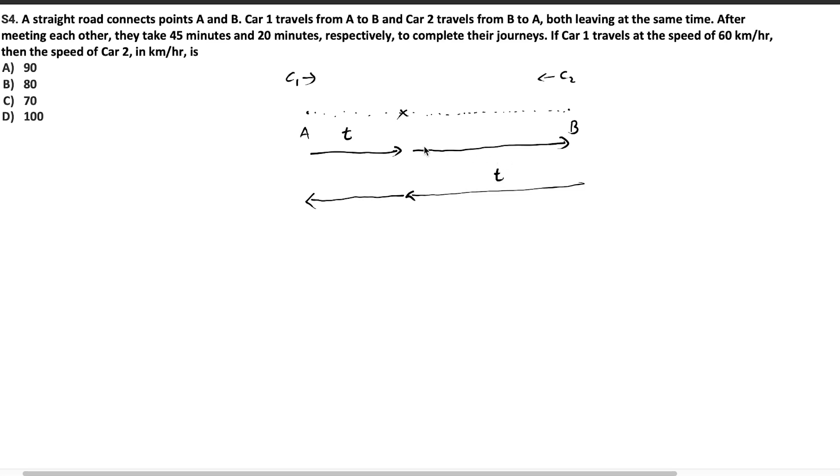Now let's continue reading the question. After meeting each other, they take 45 minutes. So the first car takes 45 more minutes to reach destination B, and car C2 will take 20 minutes to complete the journey, 20 minutes to reach the destination, which is A. If car 1 travels at the speed of 60 km per hour, then the speed of car 2 in km per hour is what we have to find out. Let's take the speed of car 1 as S1 and speed of car 2 as S2.